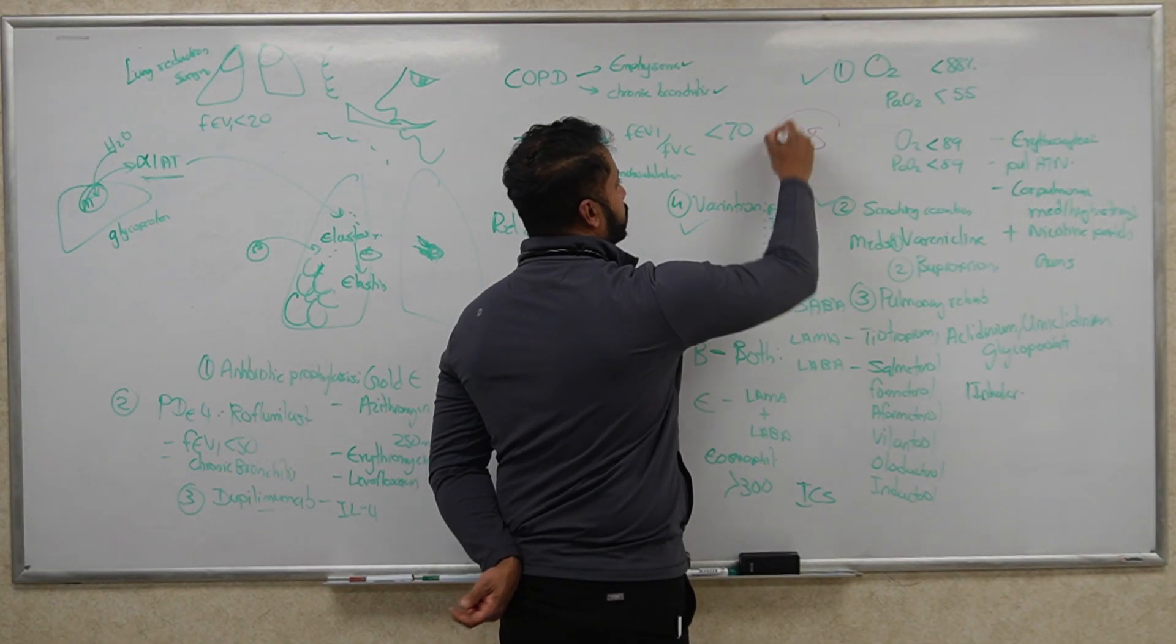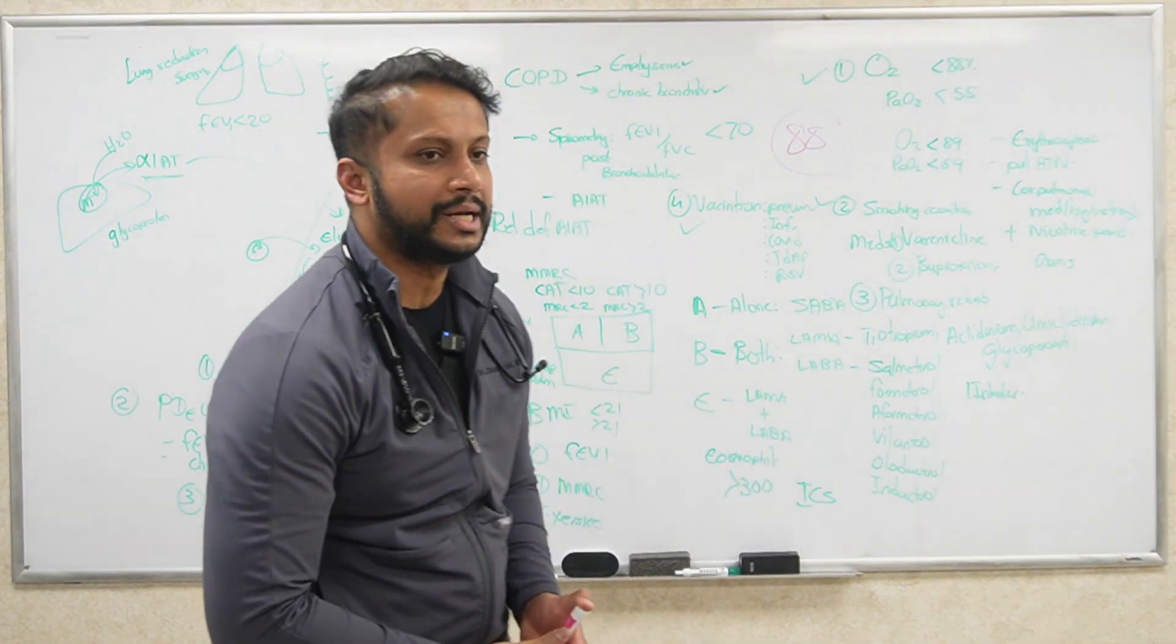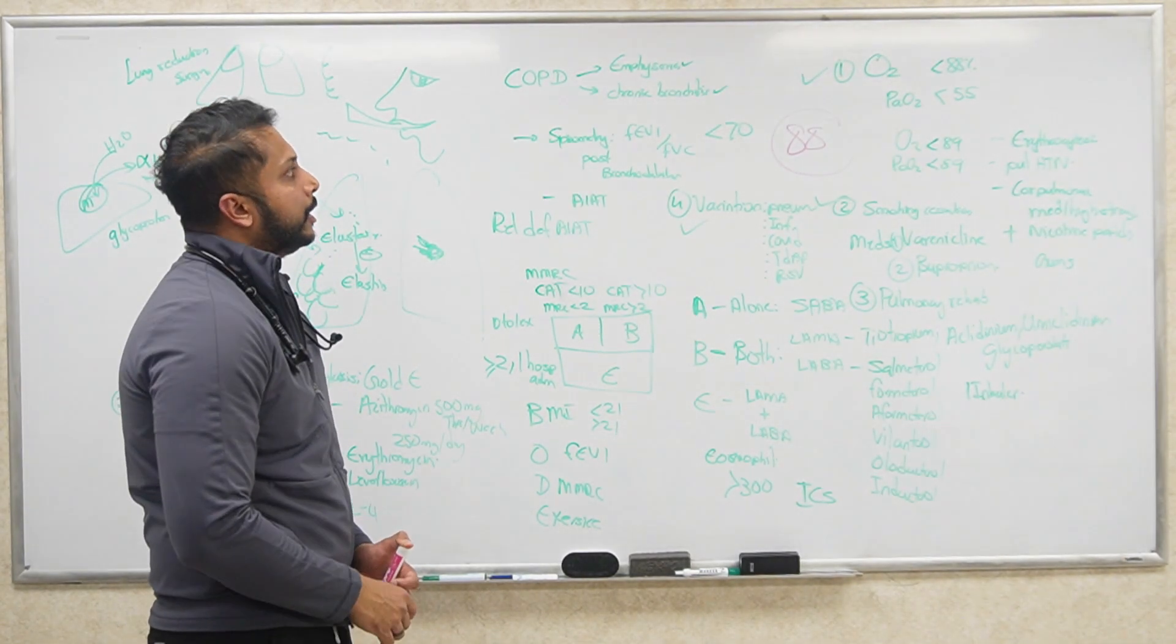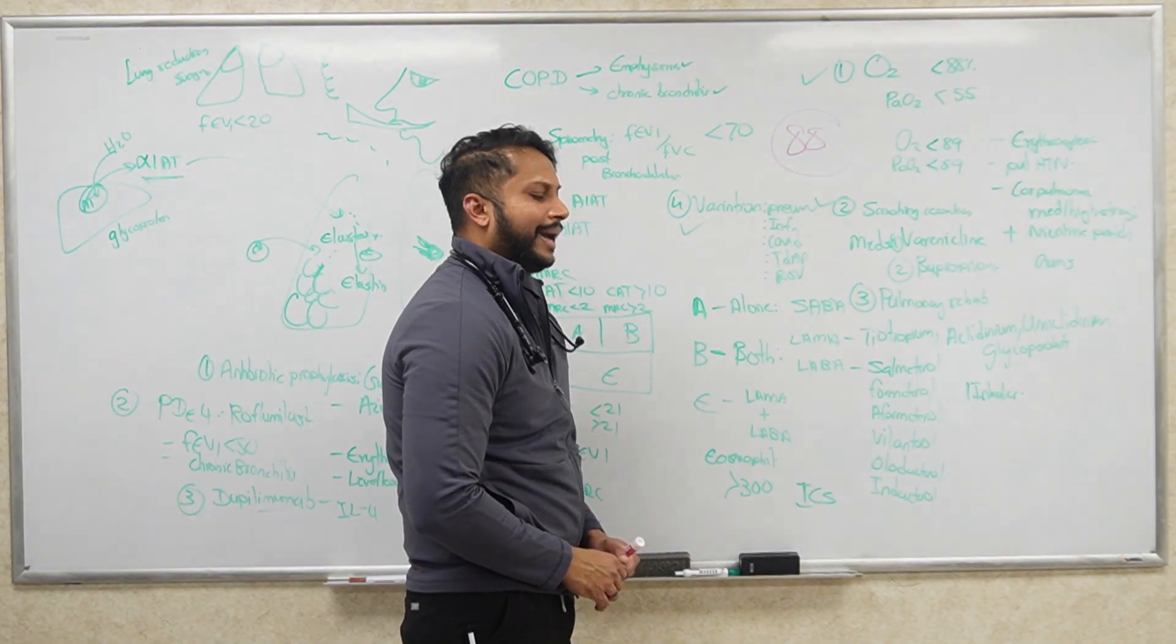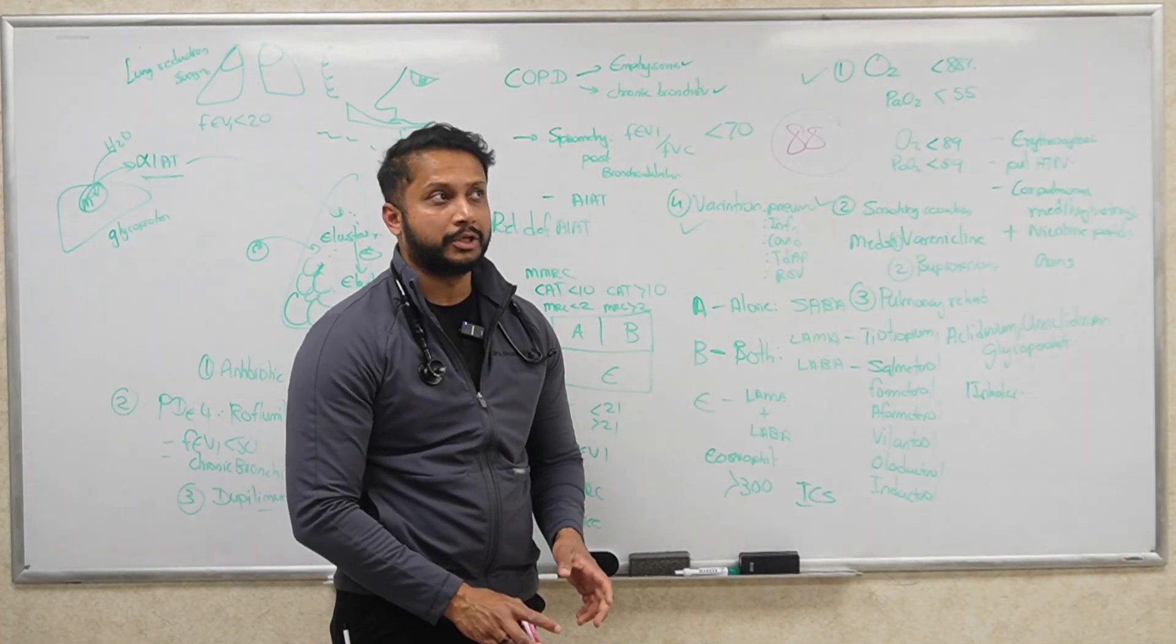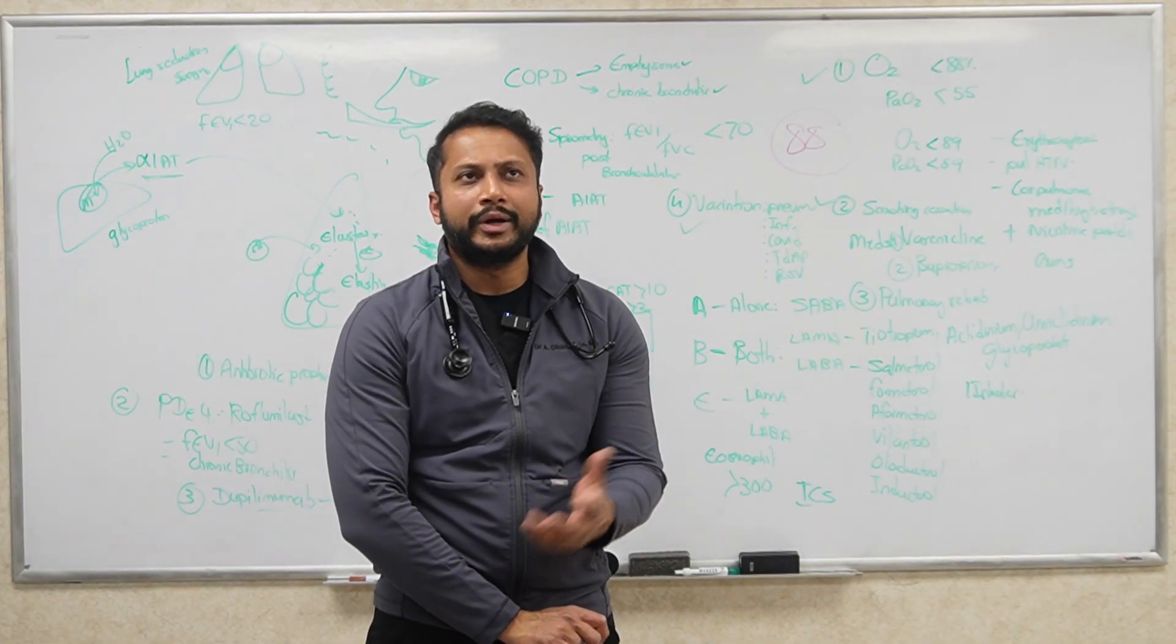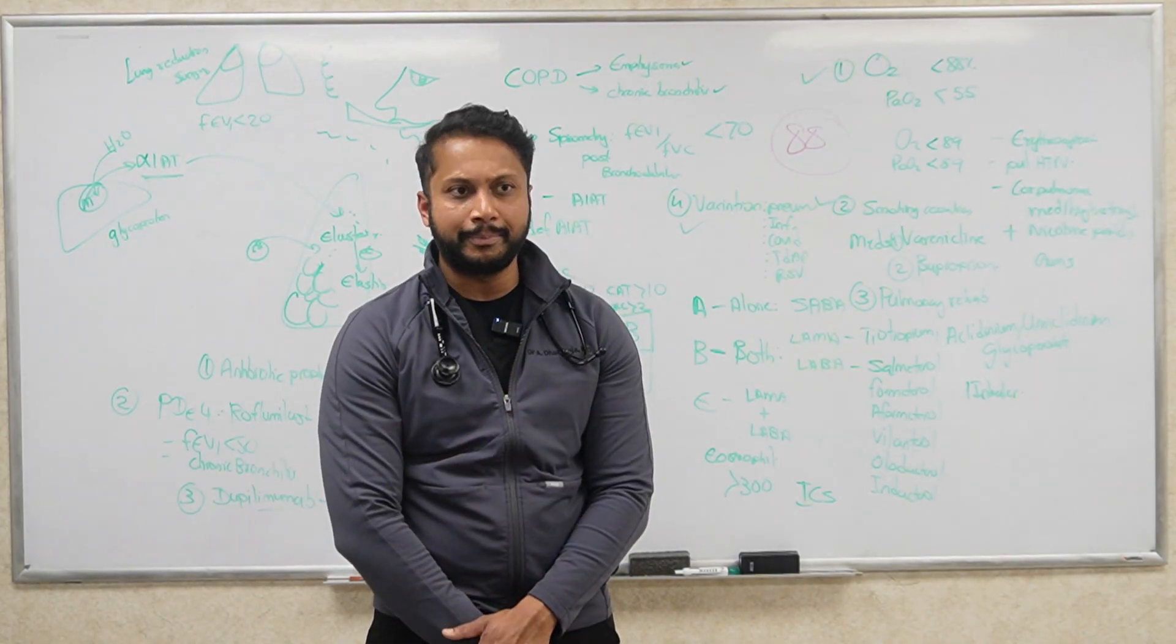Eighty-eight is good enough. We do not need 90, 92, or 100. Eighty-eight is your number. Keep it above 88 and you're happy. When would you do an ABG on your patients? Do all patients who come to the hospital with COPD exacerbation require an ABG?